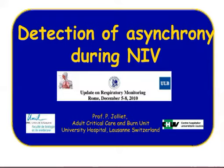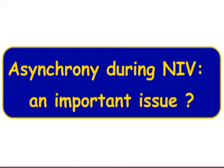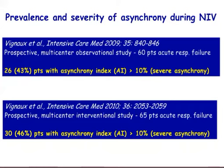First of all, let's try to have an idea of how important the problem is in terms of its clinical relevance. Looking at two studies done in cooperation with Laurent Brochard's group in Paris and Pierre-Francois Laterre's group in Brussels: in the first observational study approximately 43 percent of patients had signs of severe asynchrony as defined by the asynchrony index, whereas the second study found quite similar data with 46 percent. So it is a clinically relevant problem because almost half of patients have severe asynchrony during NIV for acute respiratory failure.